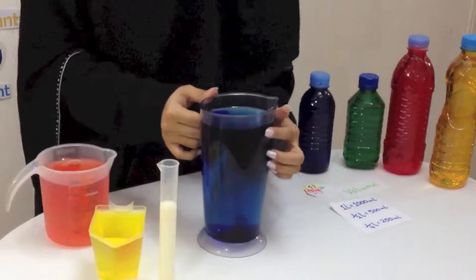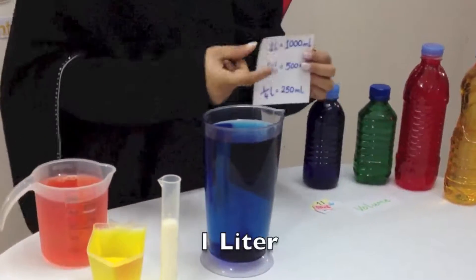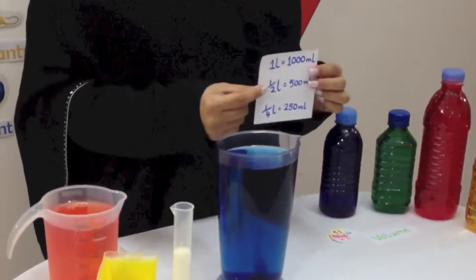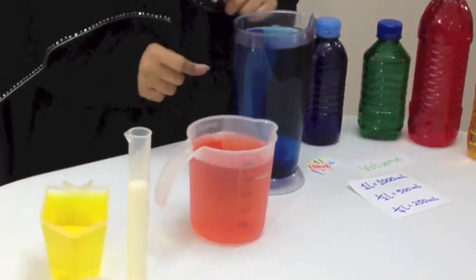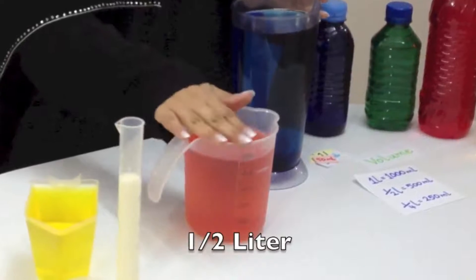This jug has a complete capacity of 1 liter, which is equal to 1000 ml. This container is 500 ml, which is half of 1000 ml, half of this big jug.